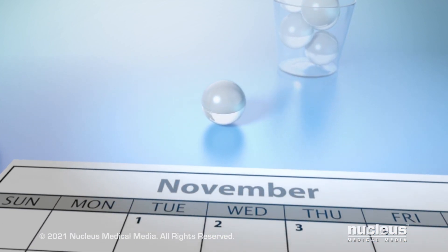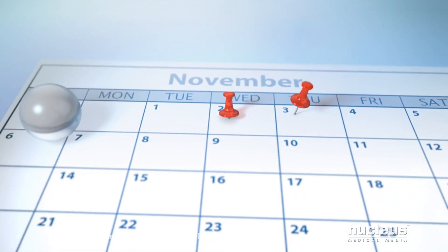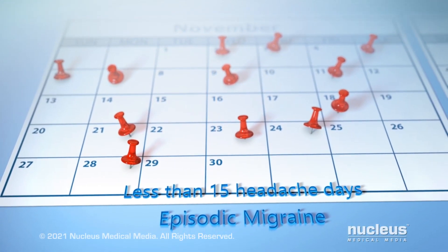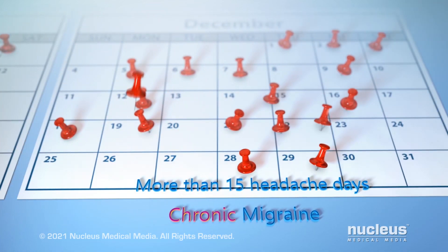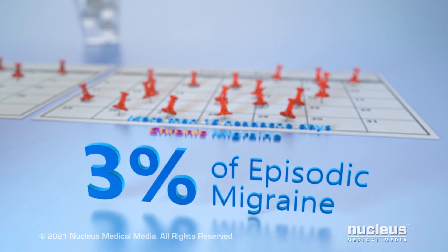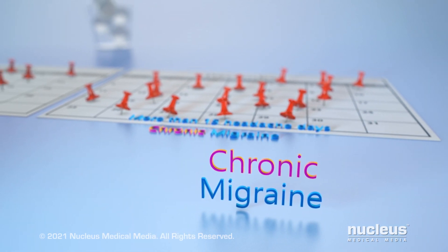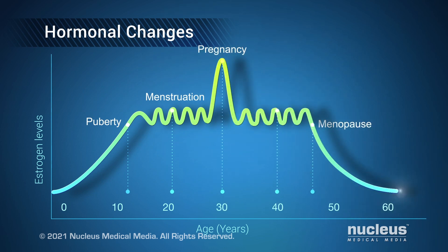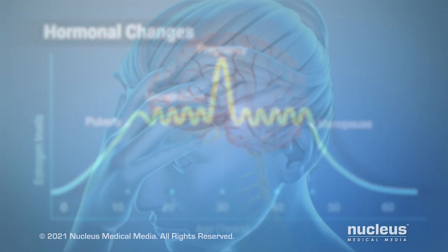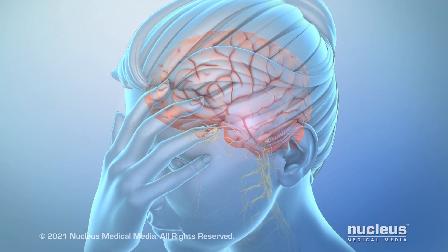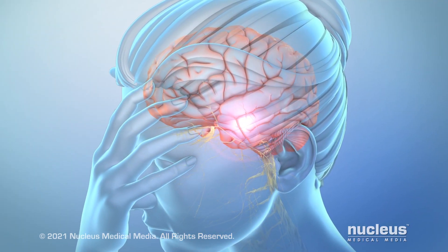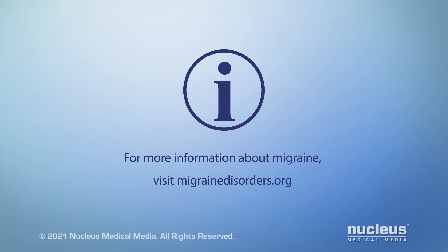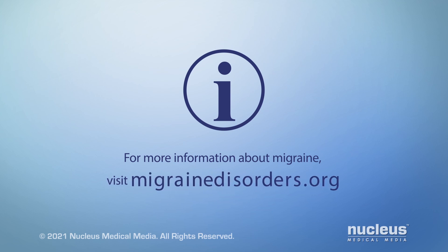It is important for treatment planning to distinguish migraine on the basis of frequency and character of attacks. Less than 15 headache days per month is episodic migraine; 15 or more headaches per month is chronic migraine. Each year, about 3% of those with episodic migraine become chronic. This worsening of symptoms may be due to changes in hormones, as well as cumulative effects on the nervous system from years of migraine attacks. While migraine is rarely deadly, it is an invisible disease that can steal years of quality time. For more information about migraine, visit migrainedisorders.org.